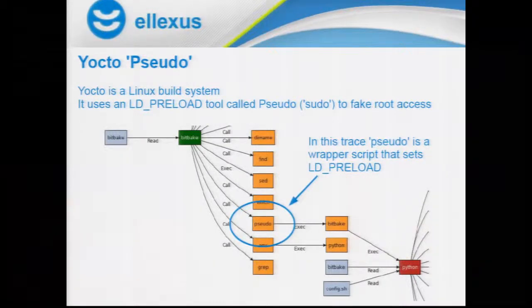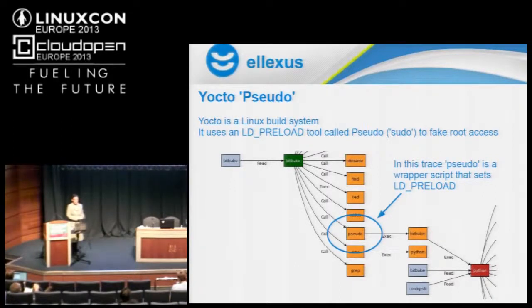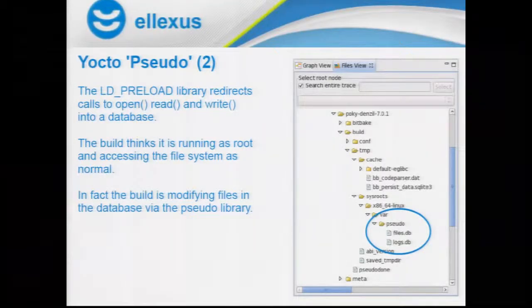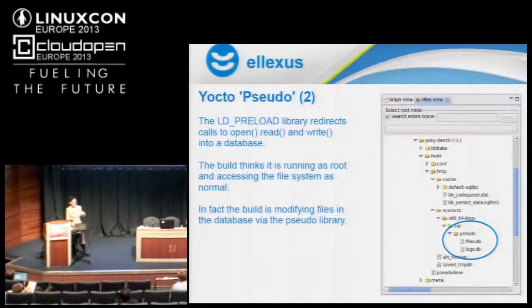Many of you may be familiar with the Yocto project. The Yocto project actually uses a tool called sudo in order to do just this. In the Yocto build, they use a build system called BitBake, which then makes a call to sudo, which is just a wrapper script that sets the LD_PRELOAD library. This is used to fake root access — during the build, the application thinks it has root access to the file system, but in fact the file system is swapped out for a database. Whenever the application tries to access a file, that open or read/write call is redirected to the database and the data it's expecting is returned. That means you can actually do a Yocto build without being root.